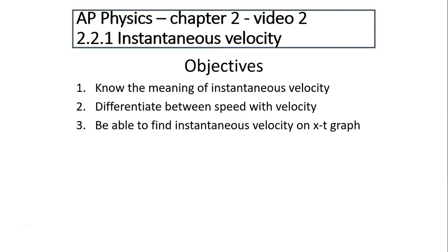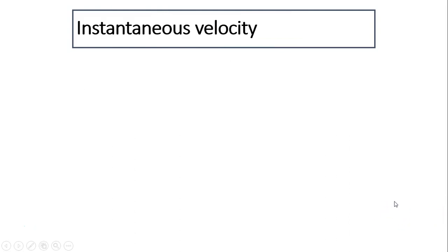Hi, this is Mrs. LaBarbera. This is AP Physics, Chapter 2, Video 2. Today's topic is instantaneous velocity. The objectives for today are to know the meaning of instantaneous velocity, differentiate between speed and velocity, and be able to find instantaneous velocity on an X-T graph.